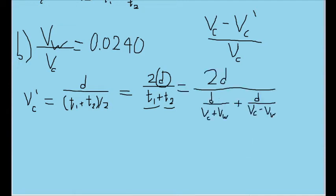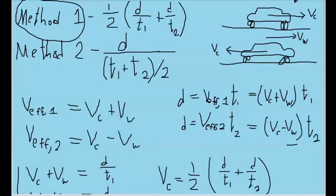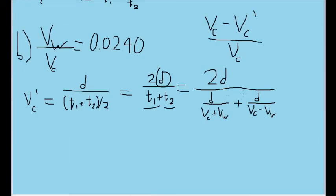We can do that by rewriting the times in terms of their speeds for each part of the motion. Recalling that time is equal to distance divided by speed, we can write t1 as the distance divided by v_c plus v_w, and t2 as d divided by the formula we found for the speed in part two of the motion as well.